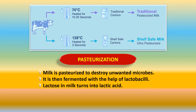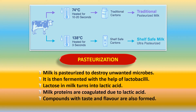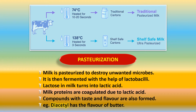The lactose, which is the sugar in milk, now turns to lactic acid. Milk proteins come together and coagulate due to this lactic acid. Compounds with taste and flavor are also formed — for example, diacetyl, which has the flavor of butter. So this is the basic process: milk is first pasteurized, then fermented, and then changed into yogurt, cheese, butter, etc.